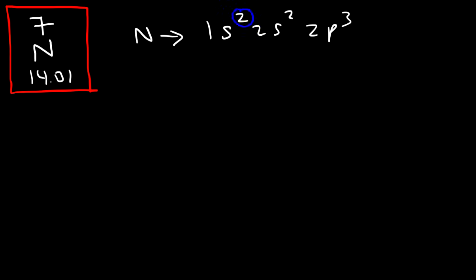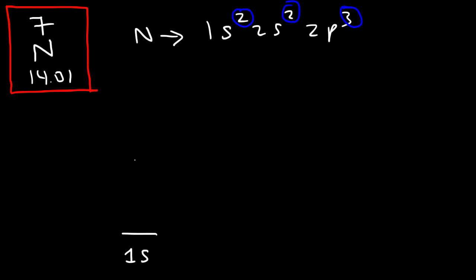Notice that the exponents have to add up to the number of electrons in a nitrogen atom. In an atom, the number of protons — which is 7 — is equal to the number of electrons. In an ion, they differ. Once you have the ground state electron configuration, you can draw the orbital diagram. This is the 1s energy level, this is 2s, and this is 2p.